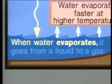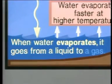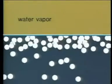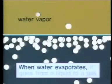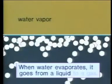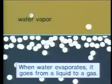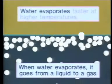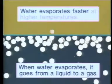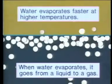First fact: when water evaporates, it goes from a liquid to a gas. Here's what happens — the molecules in water are moving around, and some of them fly off into the air. This is water in the gas phase, called water vapor. When water evaporates, it goes from a liquid to a gas.